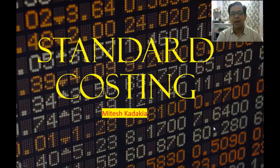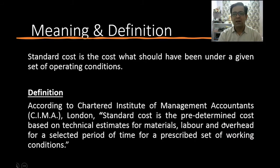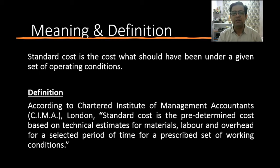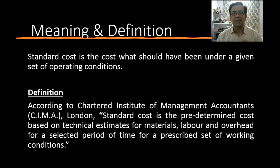Standard cost is the cost that should have been incurred under a given set of operating conditions. In simple words, if everything is perfect, what is the cost that a company would incur to produce a certain unit — that is what we understand as a standard cost.